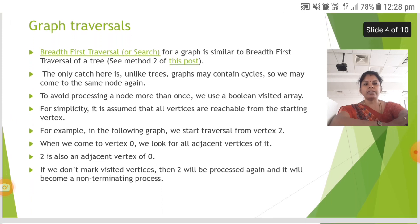The next is the graph traversal. The breadth first traversal for a graph is similar to breadth first traversal of a tree. The only catch here is unlike trees, graphs may contain cycles so we may come to the same node again. To avoid processing a node more than once, we use a Boolean visited array.